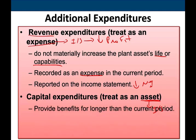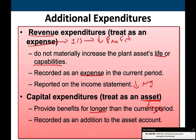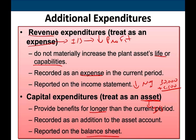Capital expenditure, on the other hand, provides benefit for longer than one period. The lift we added to the truck will typically be with us for several years. It's recorded as an asset. If we paid $30,000 for the truck and added a $2,500 lift, we add that $2,500 to the truck asset and report it on the balance sheet. It will eventually go to the income statement through depreciation.